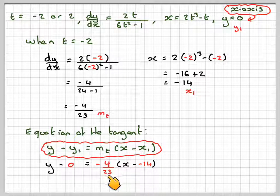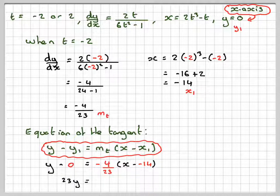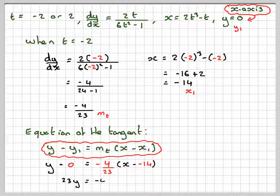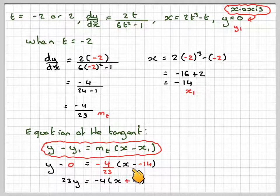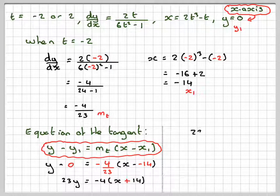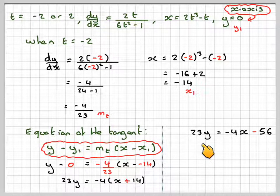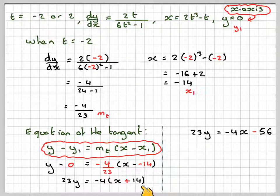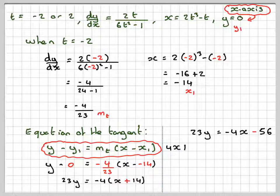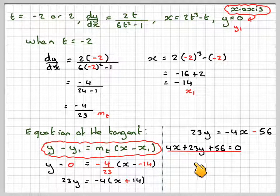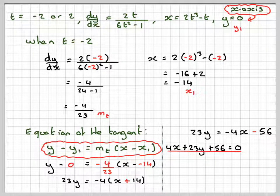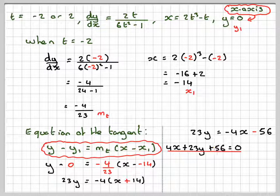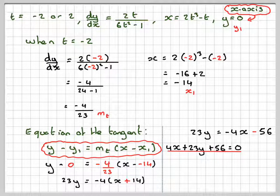Because we're dividing by 23 here, I'm going to multiply this by 23. I'm not going to do this expansion yet, just write this as (x plus 14), and then I've got minus 4 here. Expanding the bracket, I get minus 4x minus 56. Then I get 4x plus 23y plus 56 equals 0.